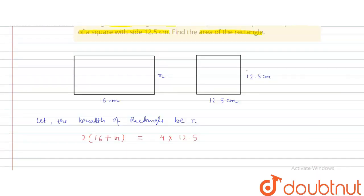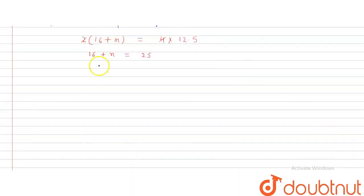Solving this equation. How to solve? This is cancel 2 and 4. So this is 16 plus x is equal to 25. So what is the value of x? The value of x is equal to 9 cm.